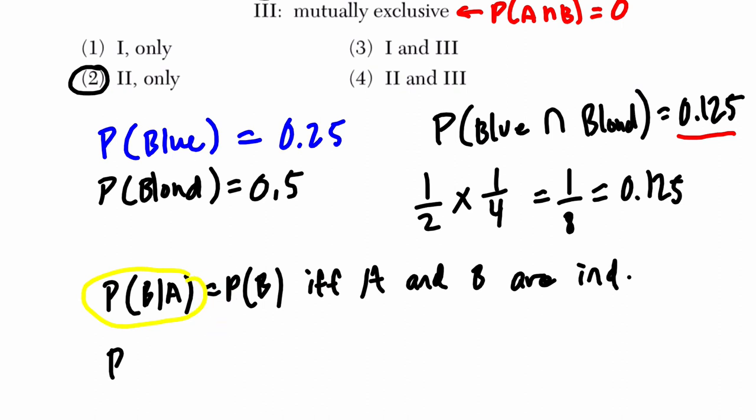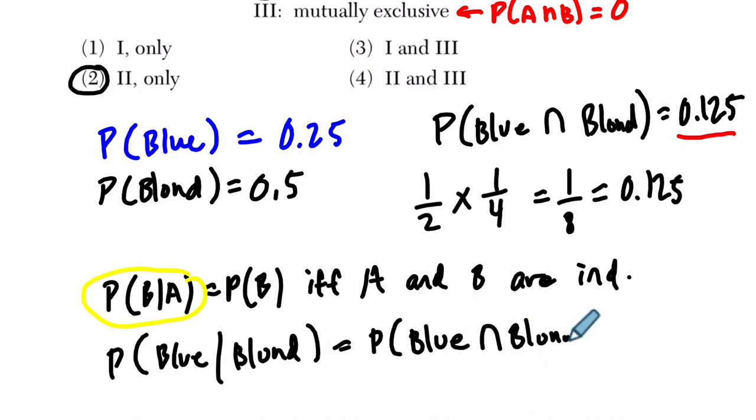In our case it would be blue eyes, let's say, given that you're blonde. Now, by definition, that has to equal the probability that you have blue eyes and blonde hair divided by the probability that you're blonde.